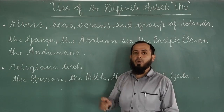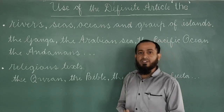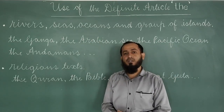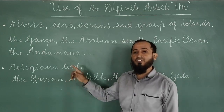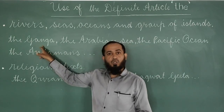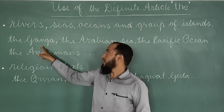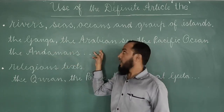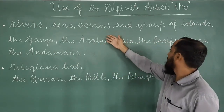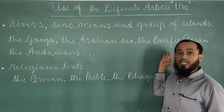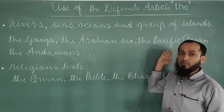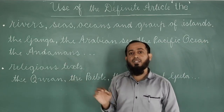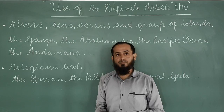Next usage: 'the' is used before the names of rivers, seas, oceans, and groups of islands. Before rivers: the Ganga, the Godavari, the River Nile. Before seas: the Arabian Sea, the Red Sea. Before oceans: the Pacific Ocean, the Indian Ocean, the Atlantic Ocean. Before groups of islands: the Andamans, the Andaman and Nicobar, the Lakshadweep, the West Indies and East Indies.